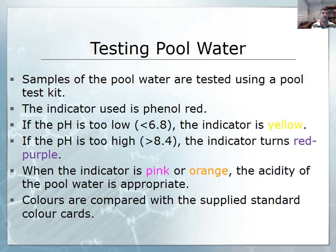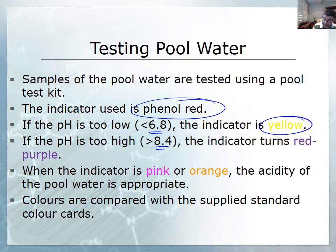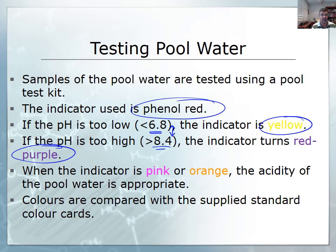The best way to do that is to sample the water. Another indicator we haven't discussed so far is phenol red. This indicator changes between 6.8 and 8.4 - yellow in the low or acidic range, purple up in the basic range, and through the mid-range a pinky orange color, indicating we're somewhere between 6.8 and 8.4, which is the more desired pH. Just like with universal indicator, you test these with different color cards and match them together. These are just some examples of where being able to test and identify the nature of solutions is very important.